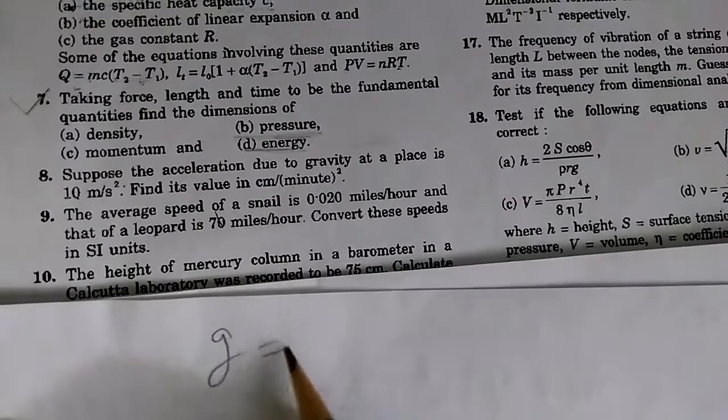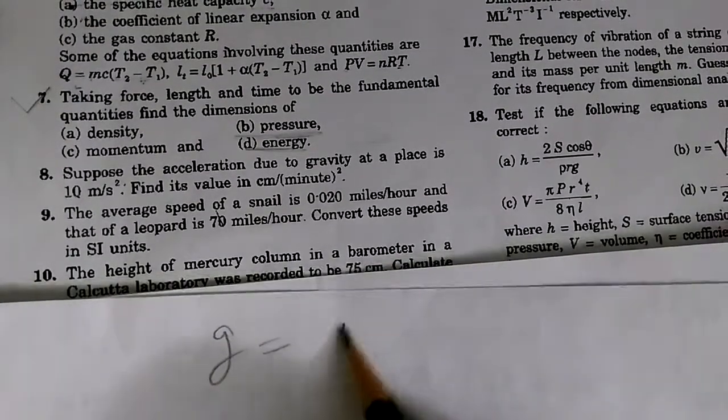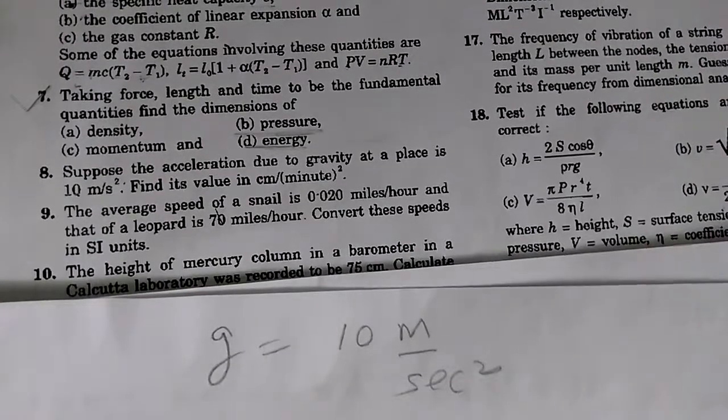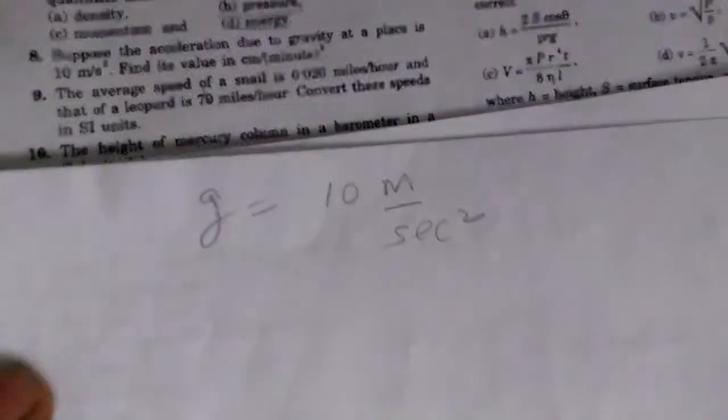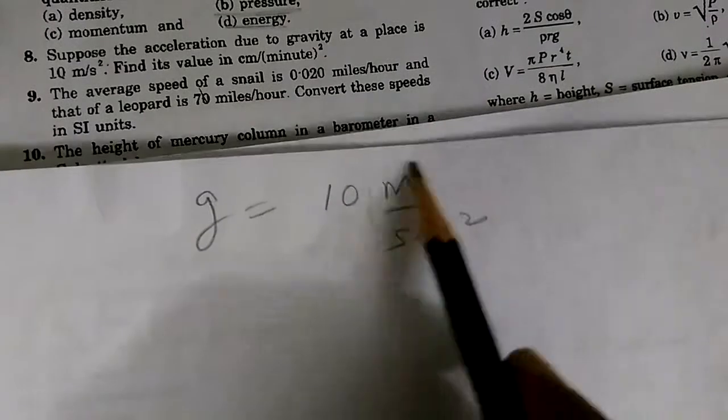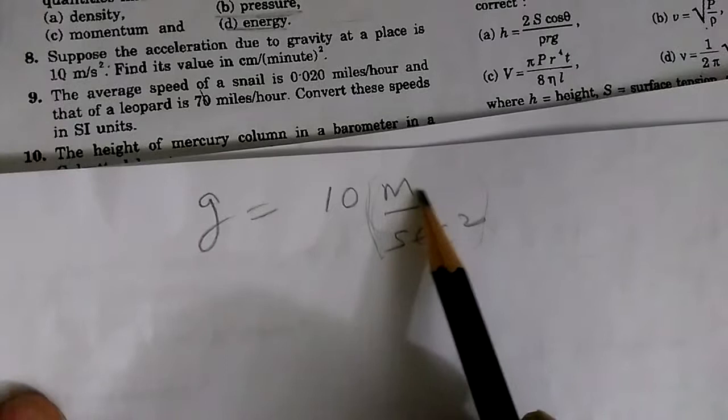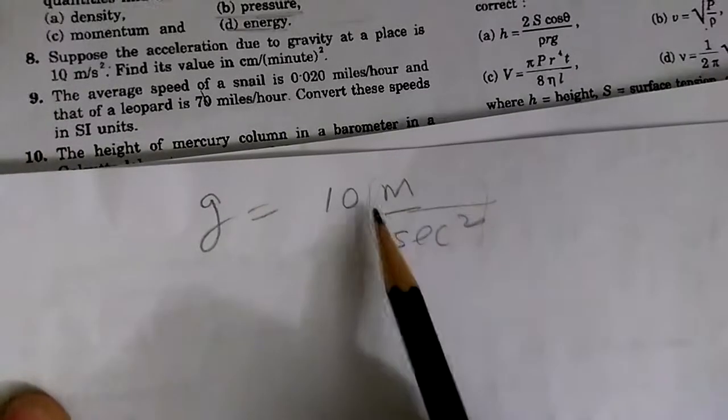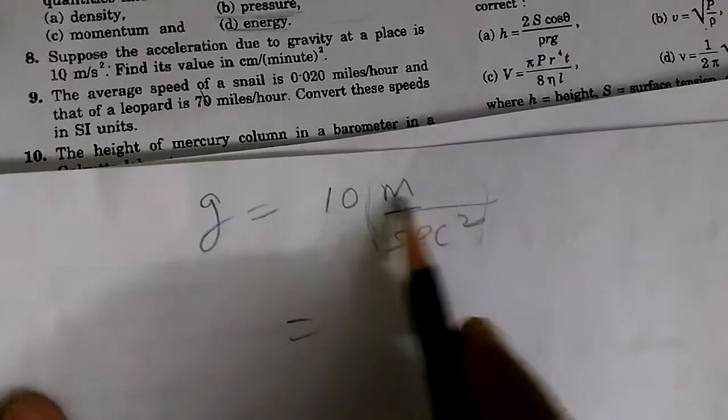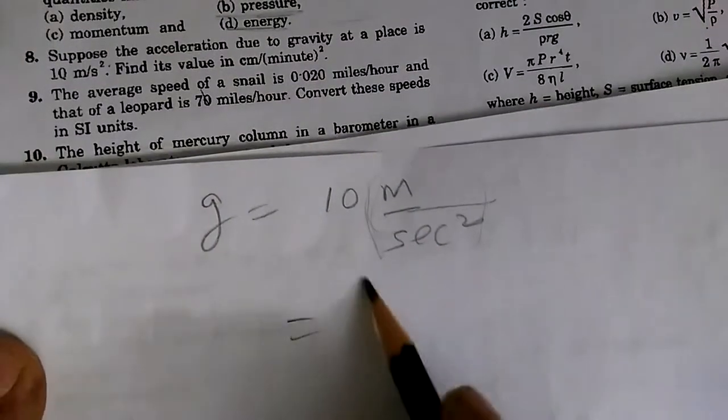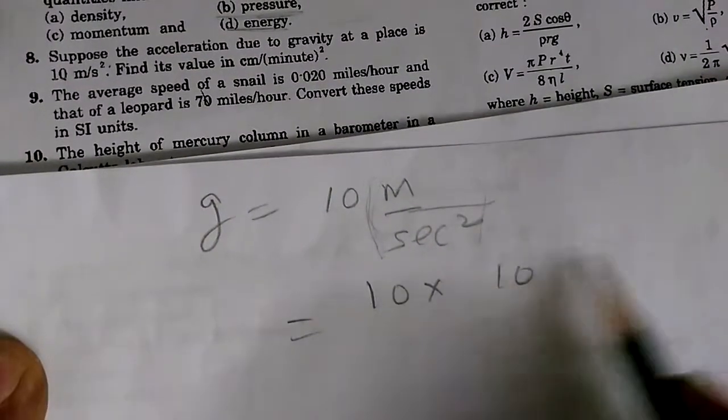So the acceleration due to gravity g is equal to 10 meter per second square. We will do it directly, but the standard way would be to see what are the units used and change each individual unit to the required unit. For example, in this one, 10 meter - if we convert meter to centimeter, we need to multiply it by 10. So we'll do 10 into 10 centimeter.